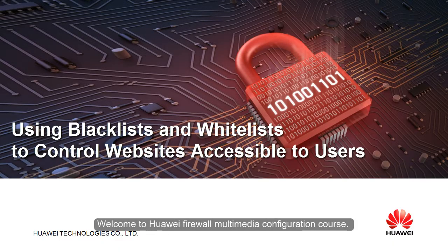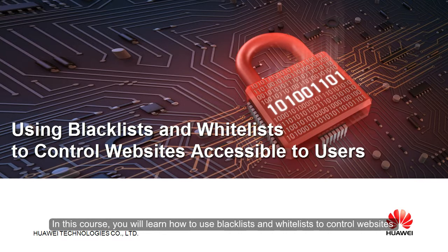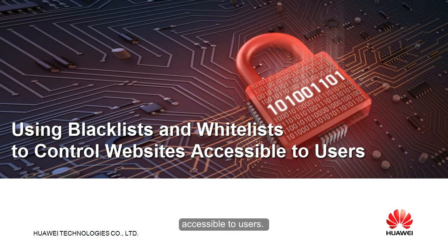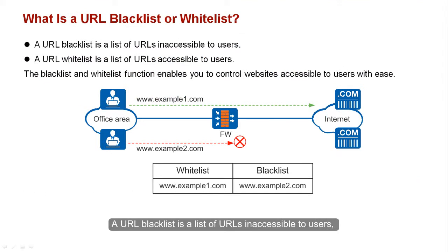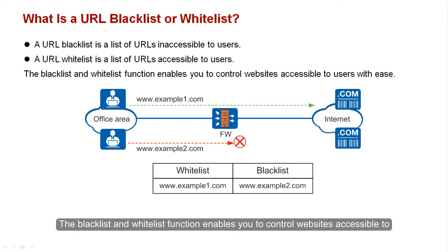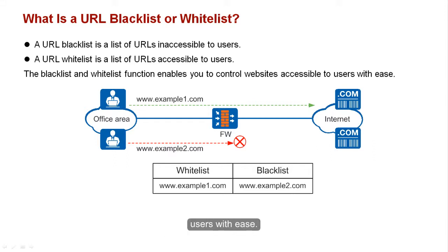Welcome to the Huawei Firewall Multimedia Configuration Course. In this course, you will learn how to use Blacklists and Whitelists to control websites accessible to users. A URL Blacklist is a list of URLs inaccessible to users, and a URL Whitelist is a list of URLs accessible to users. The Blacklist and Whitelist function enables you to control websites accessible to users with ease.